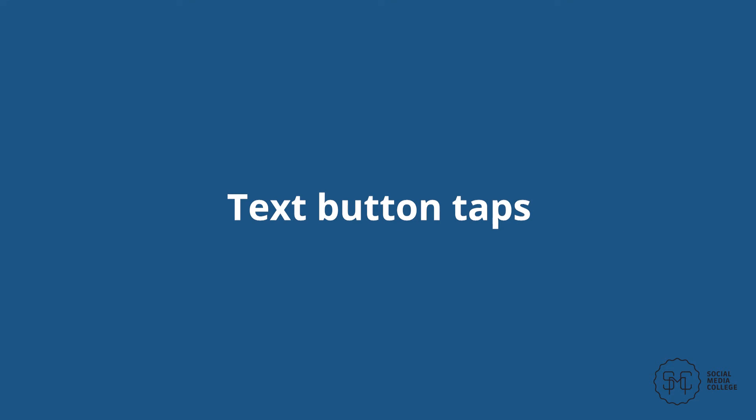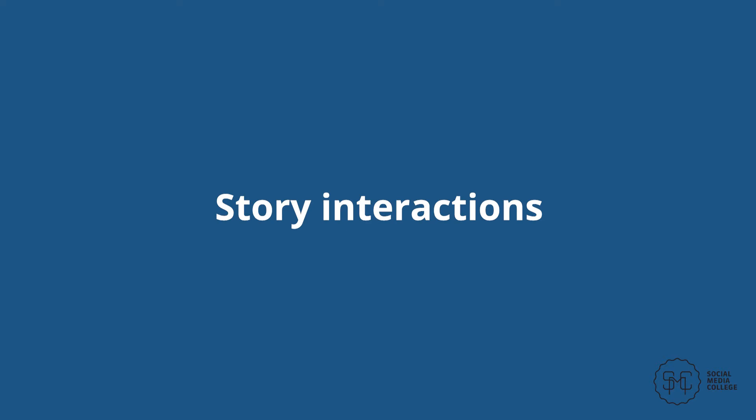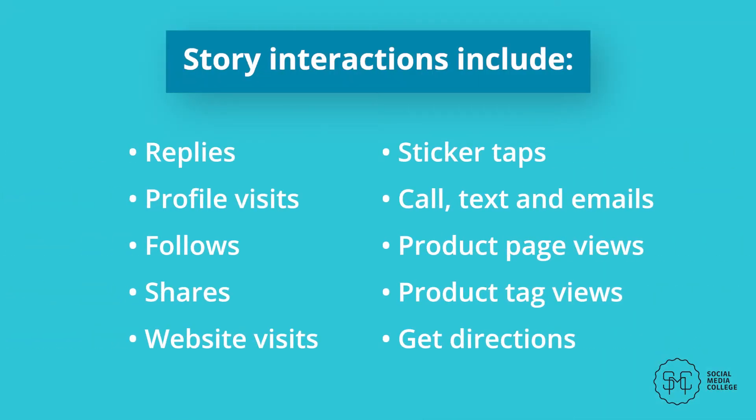Shares: the Shares metric reveals how many of your Stories viewers shared it either via a direct message or to their own Stories. Text Button Taps: this measures how many of your Story's viewers tapped a button included in your text, such as an at mention. Website Taps: this metric lets you know who headed to your profile from your Story to visit your website — it's valuable to know whether you're driving traffic off-platform. Story Interactions: this measures your top engaged Instagram Stories, where the most actions were taken, including direct message replies and profile visits. This metric aggregates all interactions and ranks each Story based on its total number of interactions.